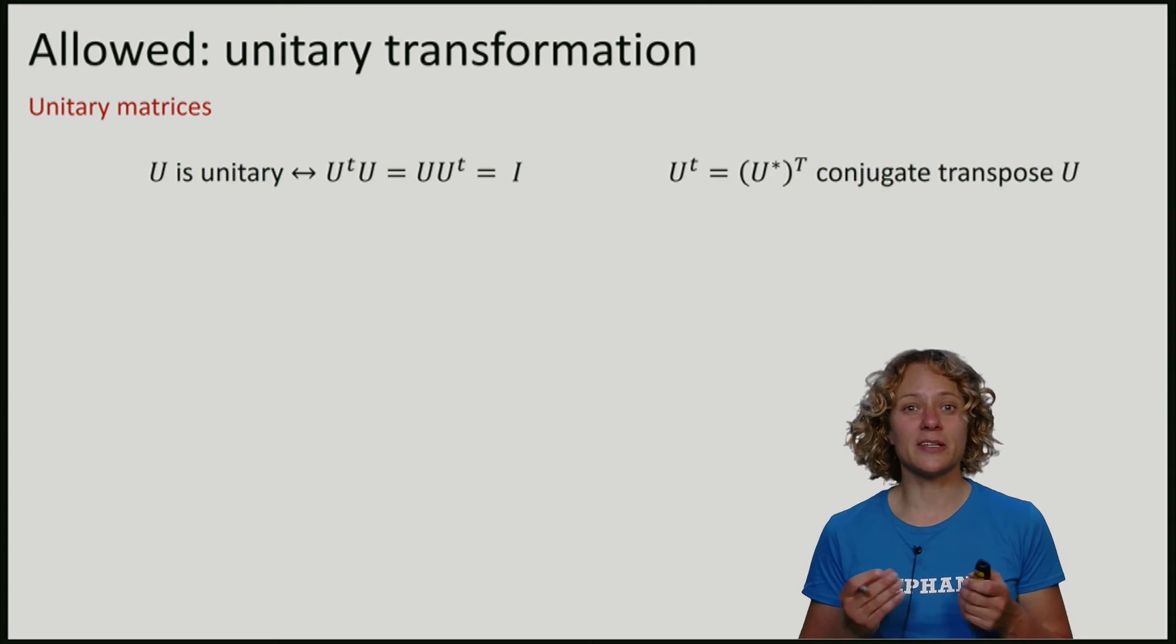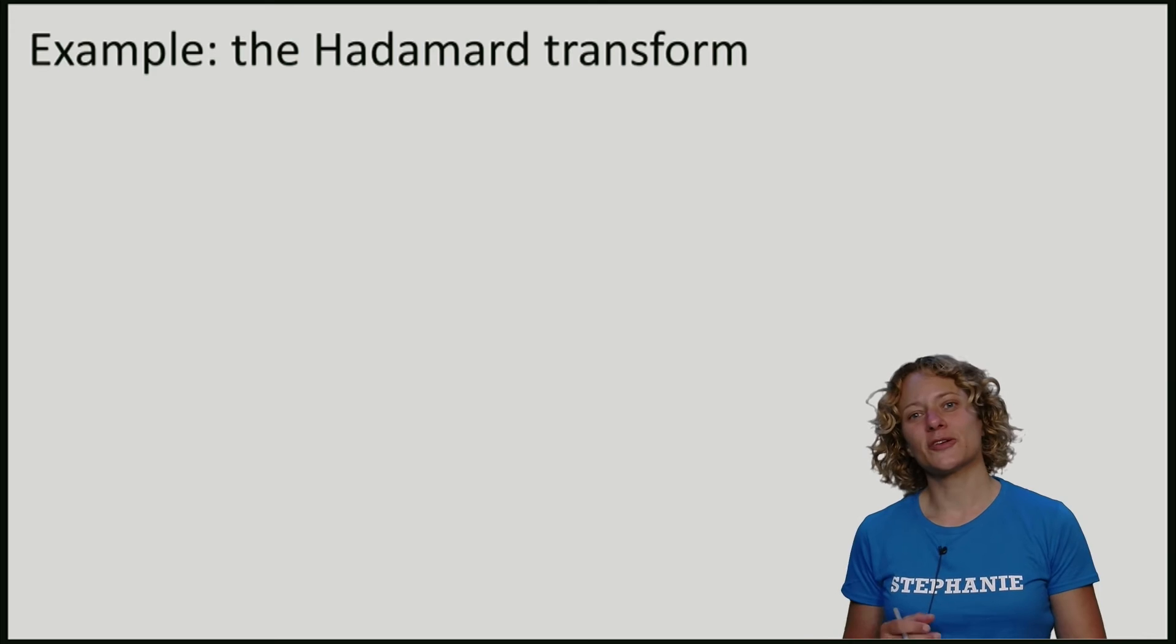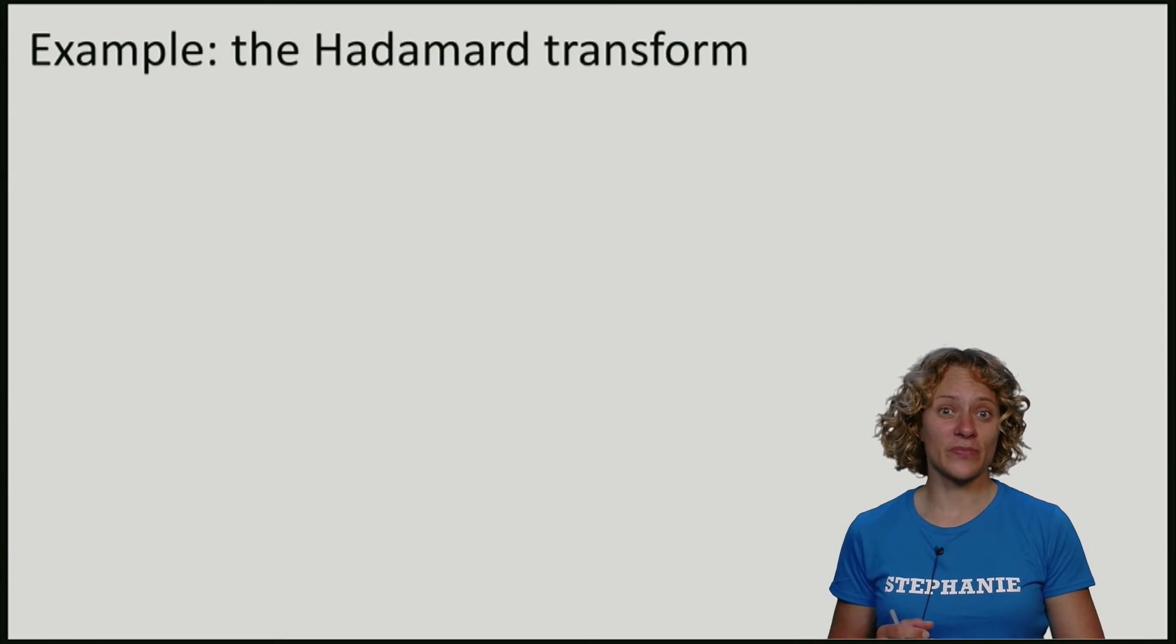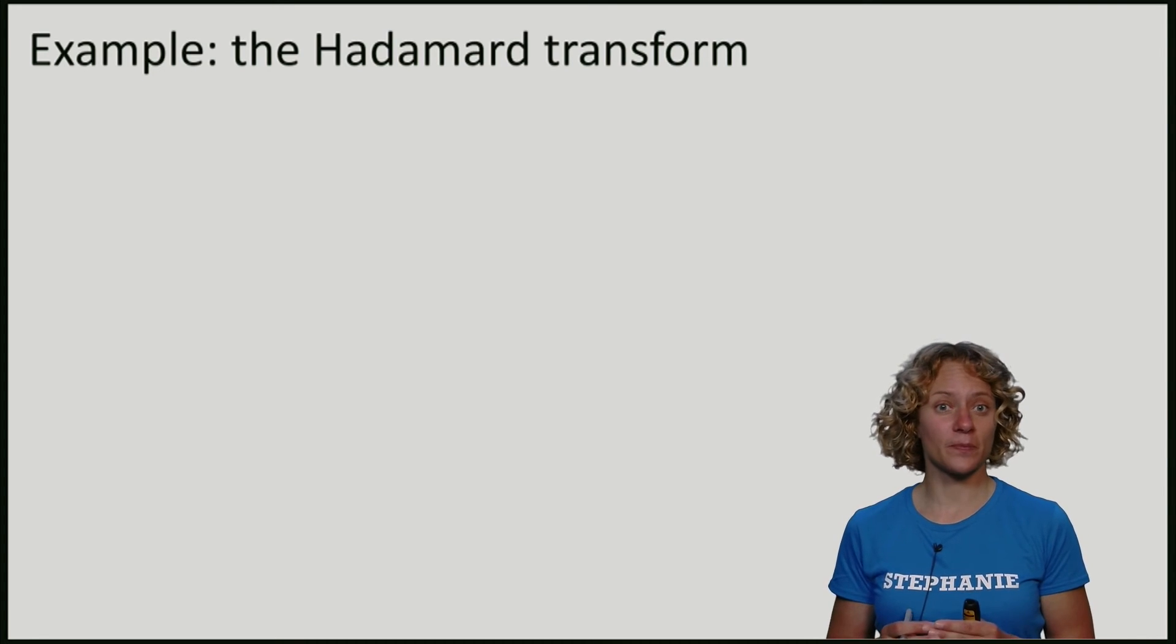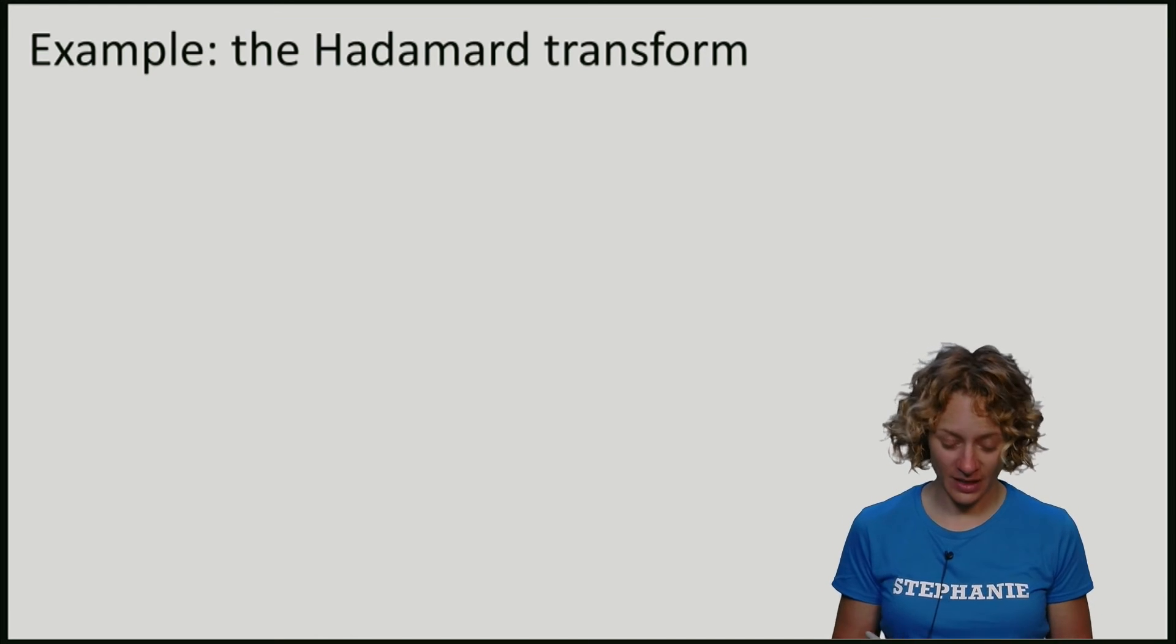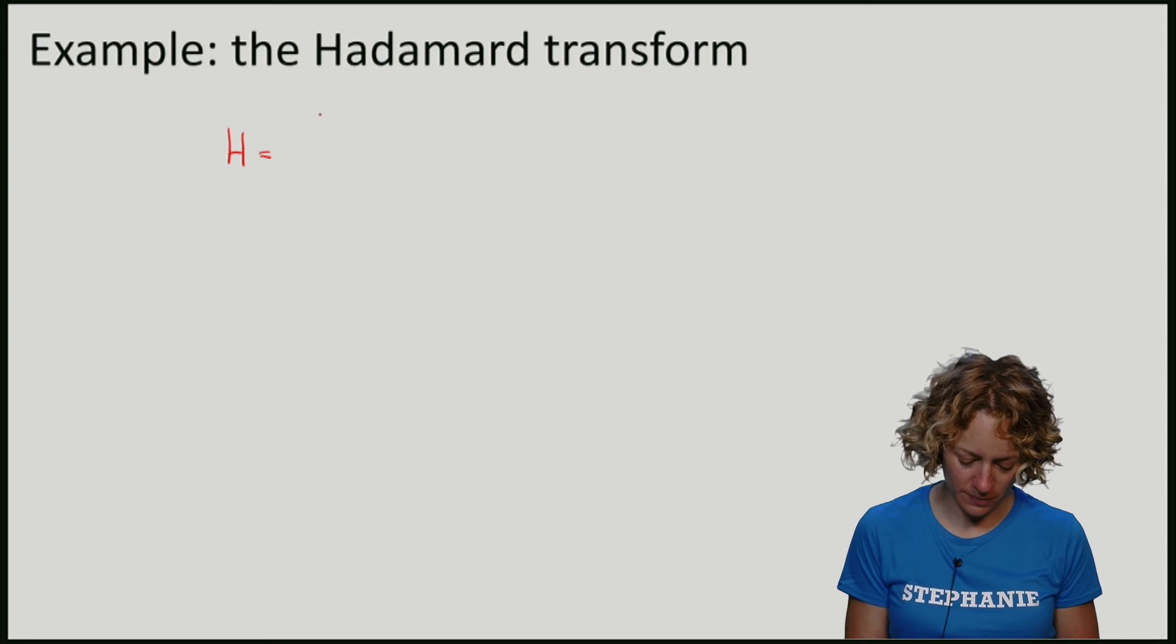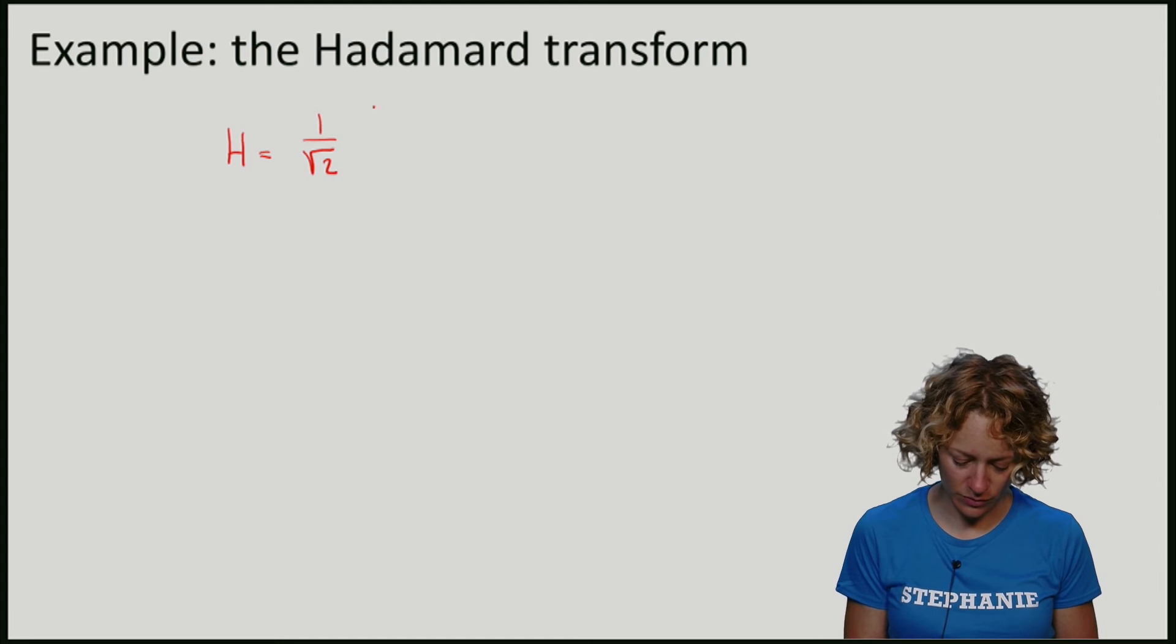Let's now consider a simple example of a unitary operation. The unitary that we will consider is often written as H for the Hadamard transform. And this unitary transformation is given by the following matrix: 1 over square root 2, times 1, 1, 1, minus 1.